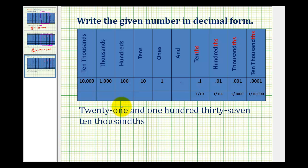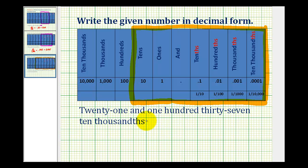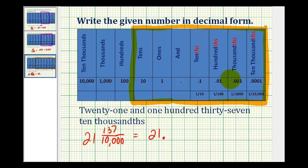The number twenty-one will have digits in the tens and ones place value. Then we have one hundred thirty-seven ten-thousandths. The ten-thousandths place value is four digits to the right of the decimal, so we'll use all of the place values out to there. Let's first write this as a fraction: twenty-one and one hundred thirty-seven over ten-thousandths. In decimal form, we'd have twenty-one, then our decimal point, and then 0137 — one, three, seven — in order to have four digits to the right of the decimal.